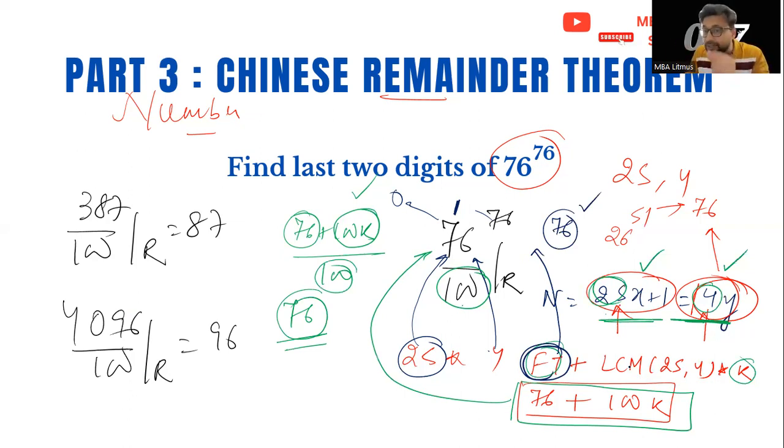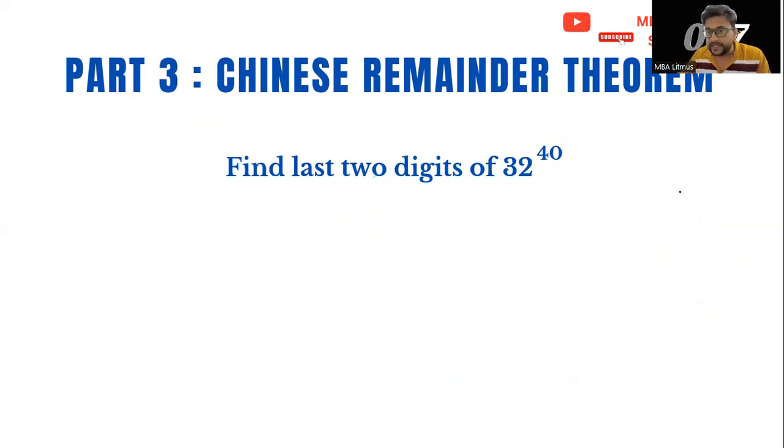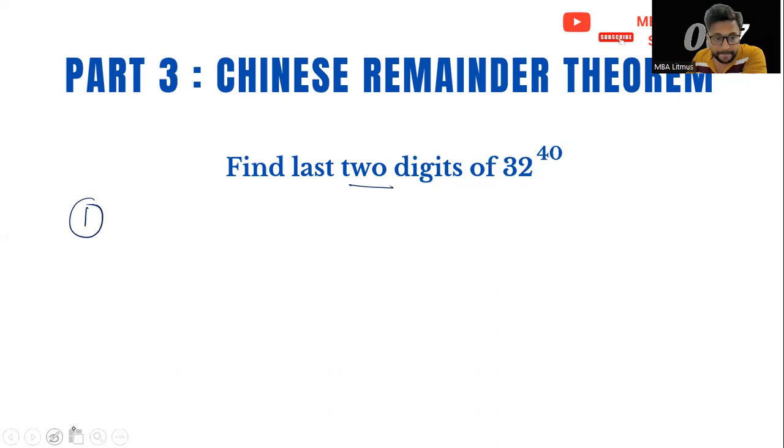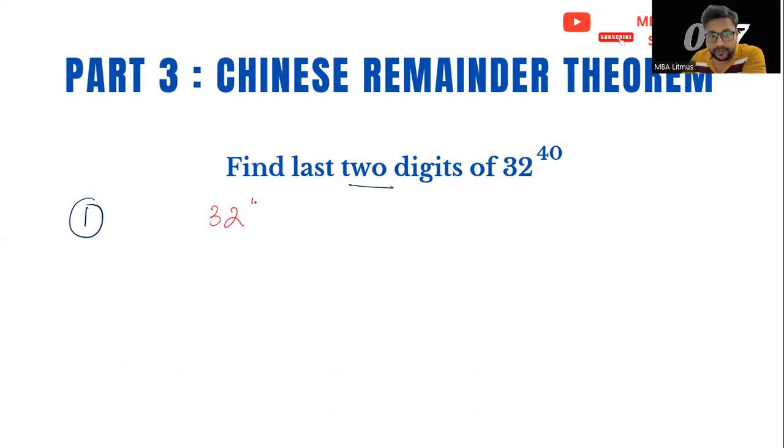Let us apply it to one more question to give you a little more clarity. Let's say 32 to the power 40. I have to get the last two digits. Let me do it step by step. Now 32 to the power 40 divided by 100, I have to take remainder. This is my question. Number two, I have to write 100 as product of two co-primes, so 25 into 4.